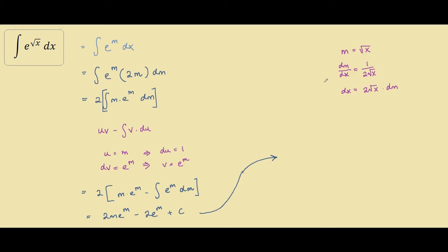Now we replace all the m's with square root of x to get back into the x world. We have 2 times square root of x times e to the square root of x, minus 2 times e to the square root of x, plus c. Lastly, we take out a common factor of 2e to the square root of x, leaving square root of x minus 1, plus c. This is our answer.